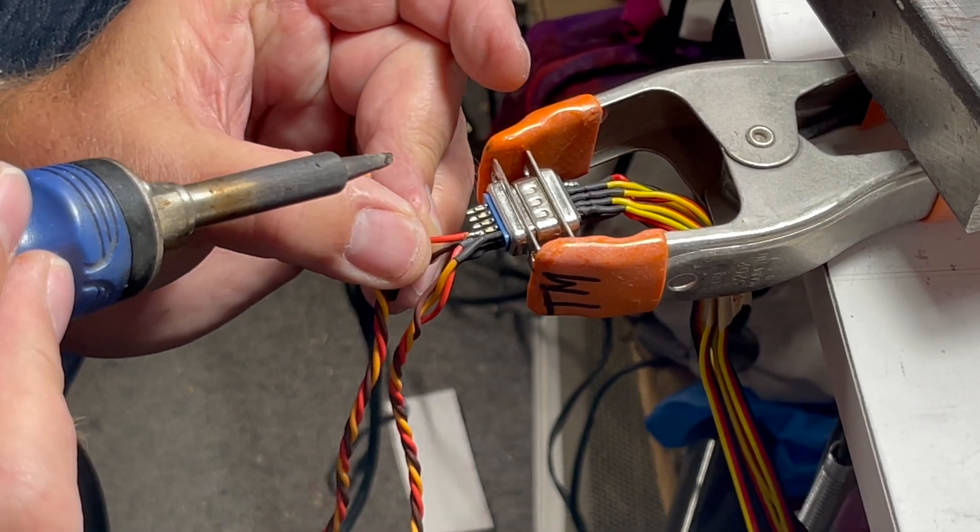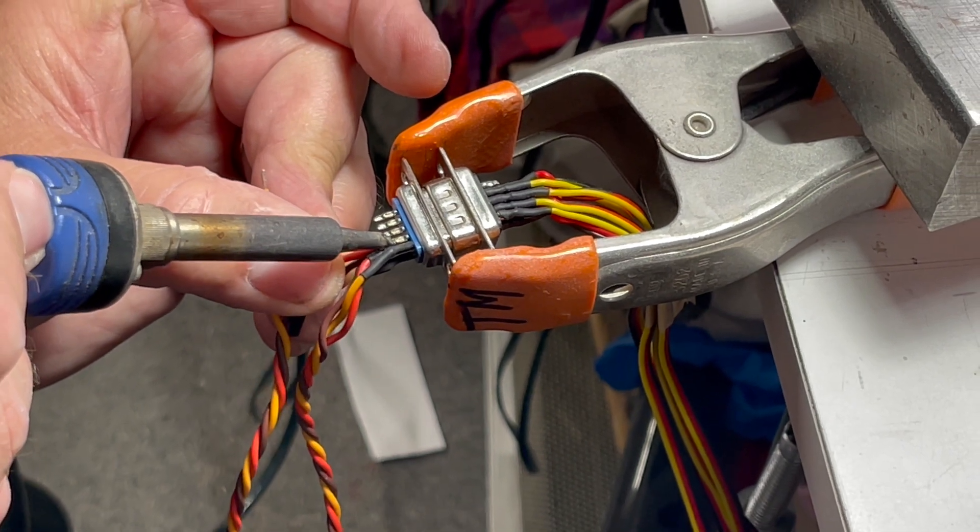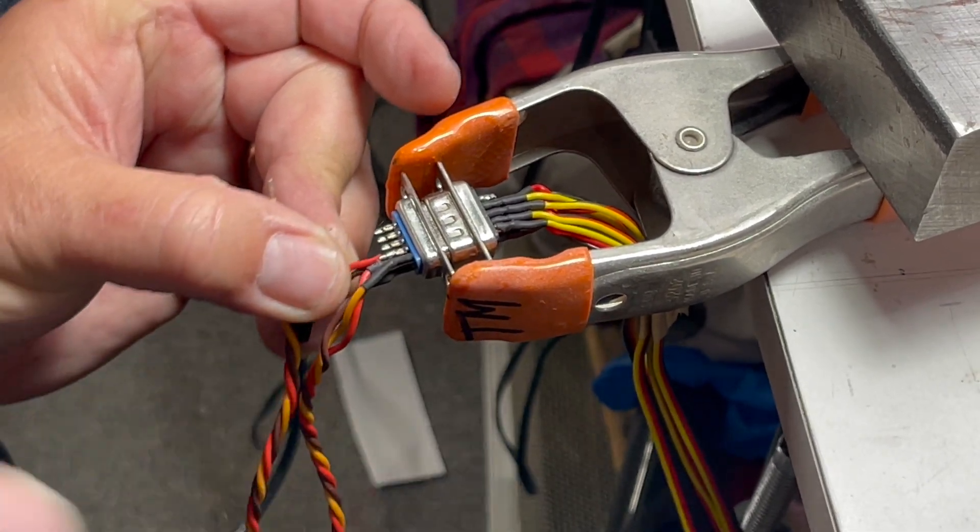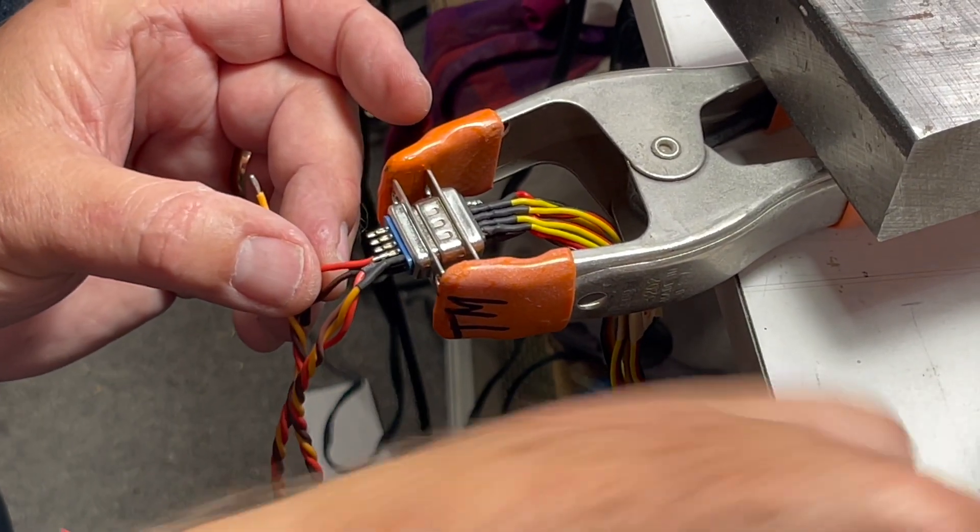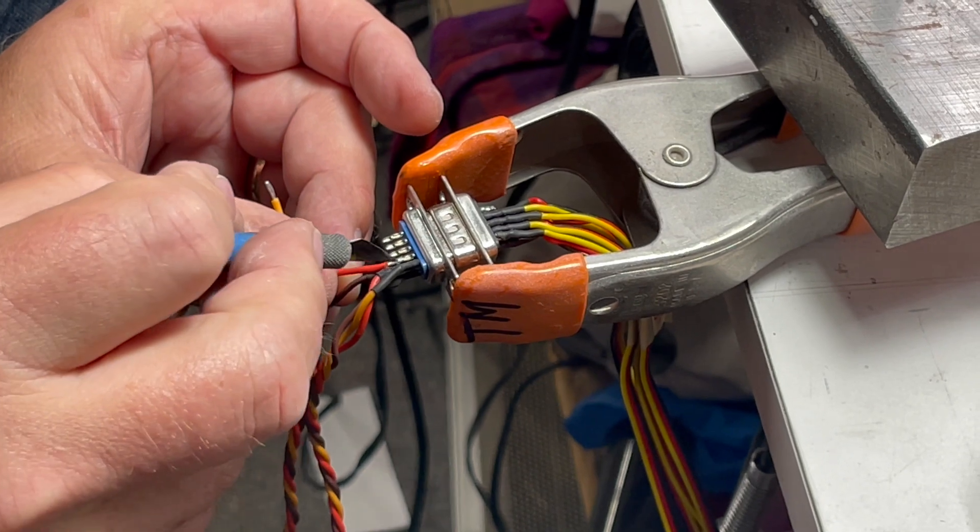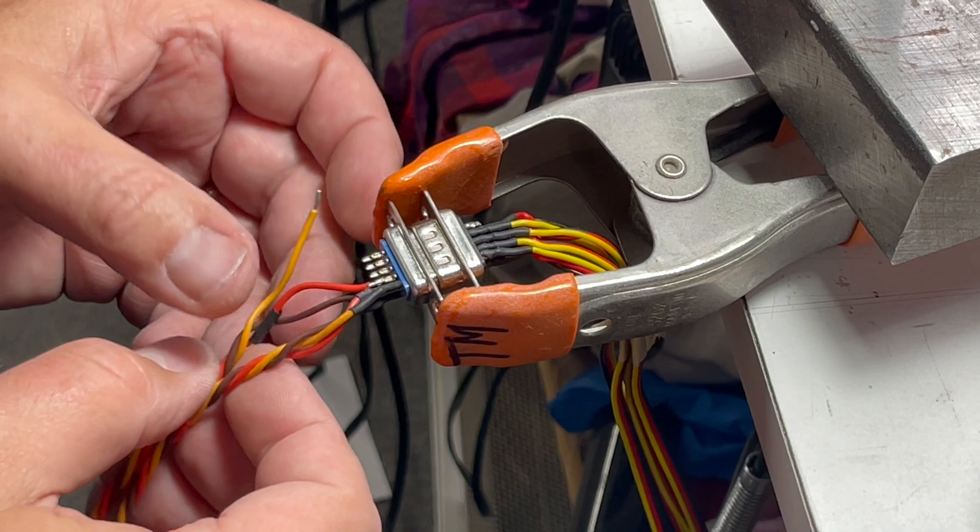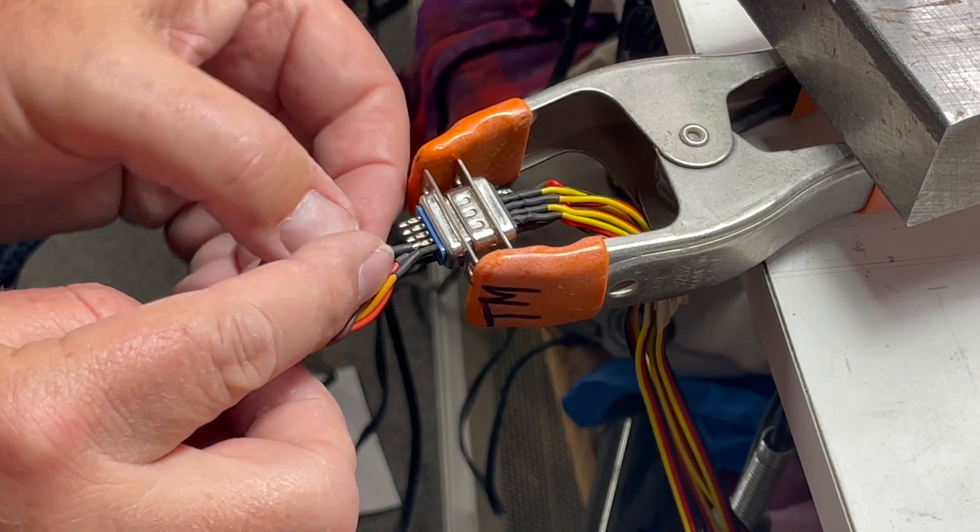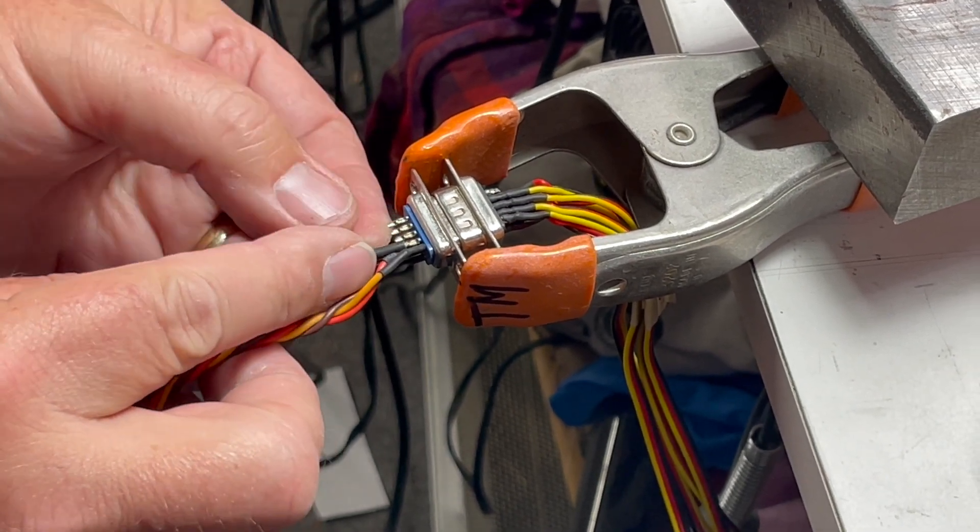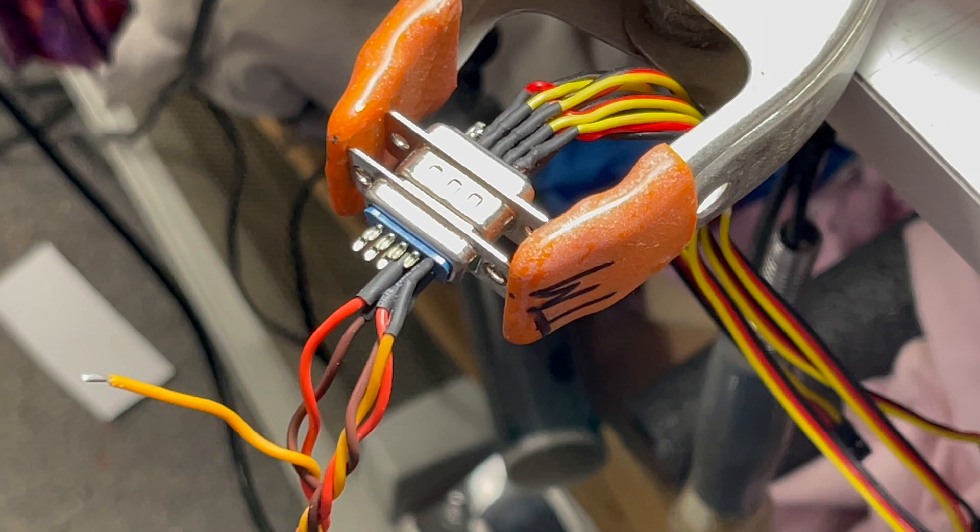So again there's already solder on it so all I need to do is just get it hot and just lay it in there. There it goes, and tug on it, and then just make sure that it's not soldered onto anything else. If you need to you can use an exacto knife to separate it. Now what I want to do is I slip the shrink wrap over and you should be able to slip it all the way forward to the block itself. You can kind of see I got it there. So now what I'm going to do is I'm going to shrink it with the heat gun.